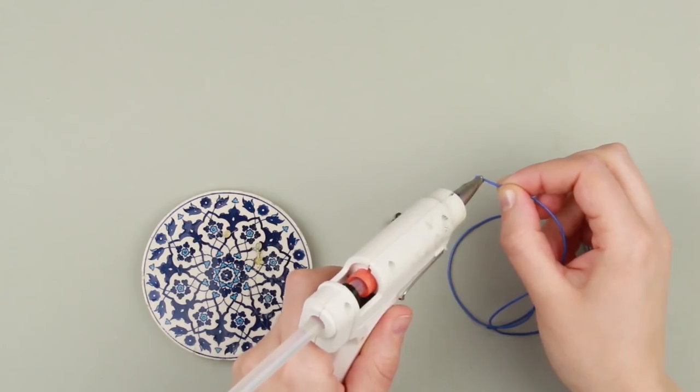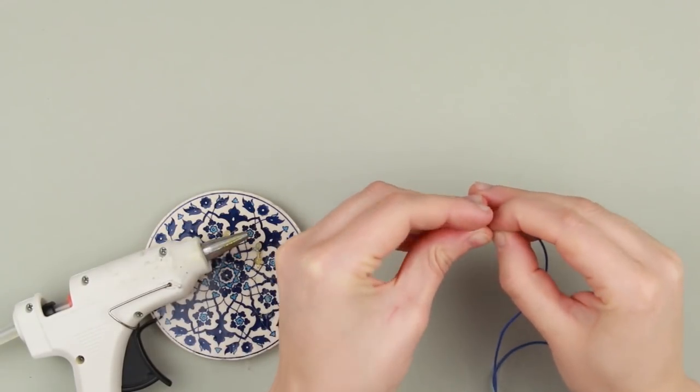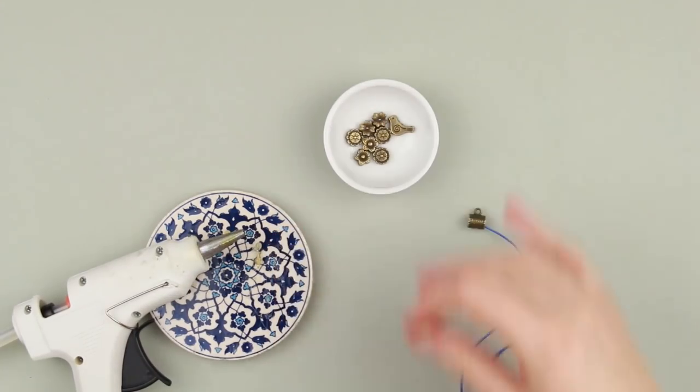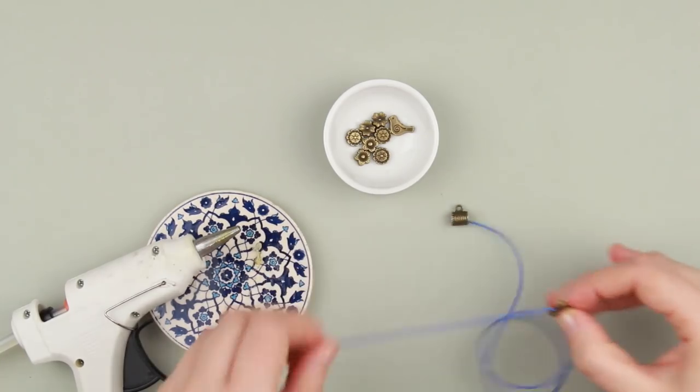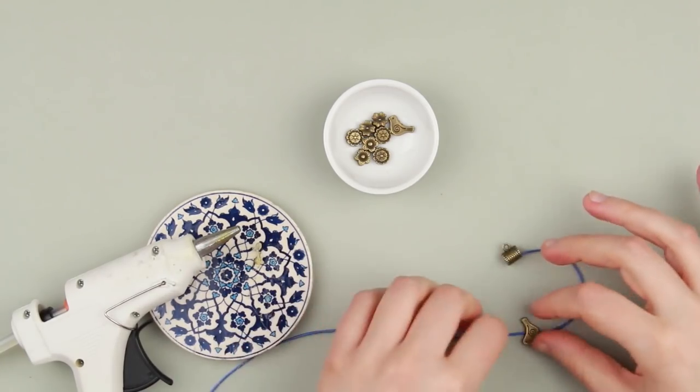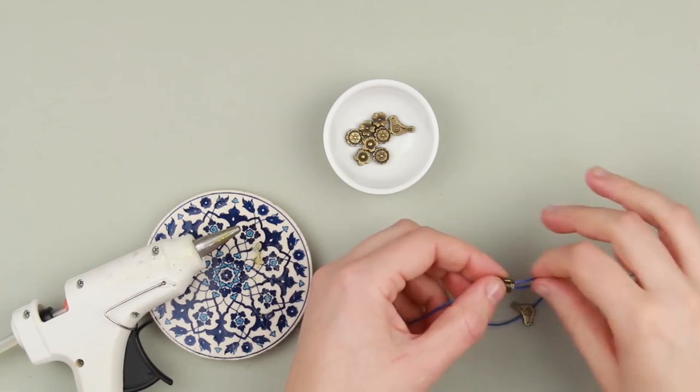Hot glue the cord end. Pass it through the tube connector and press over to attach well. Thread a charm and pull up nearly to the end. Pass the second end through the other side of the connector. Pull up to shape a ring.